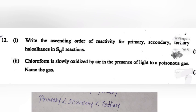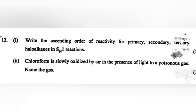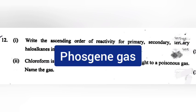Part 2: Chloroform is slowly oxidized by air in the presence of light to a poisonous gas. Name the gas. Answer: Phosgene gas.